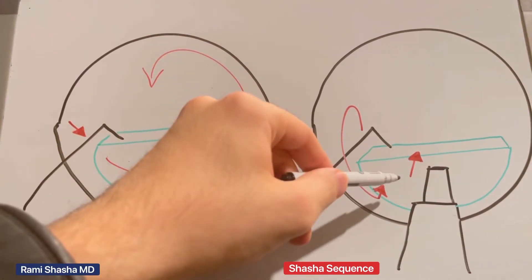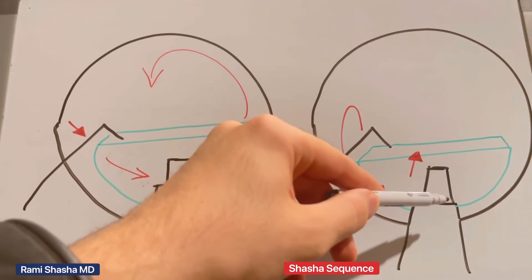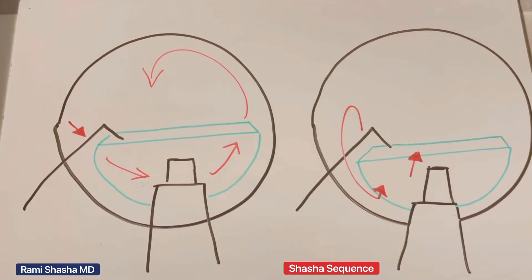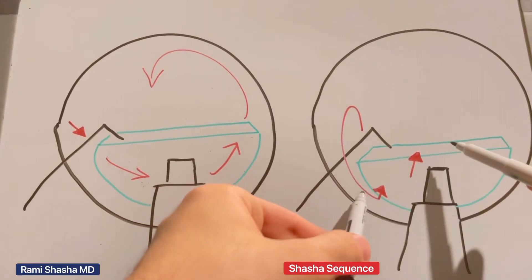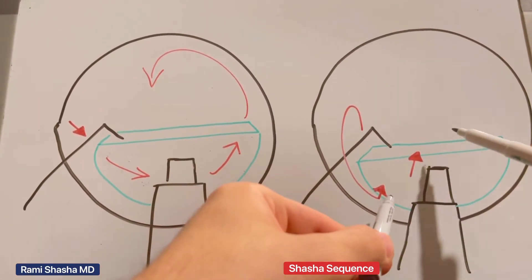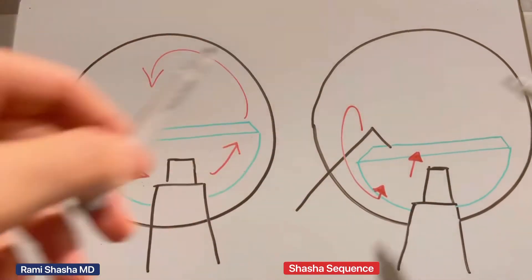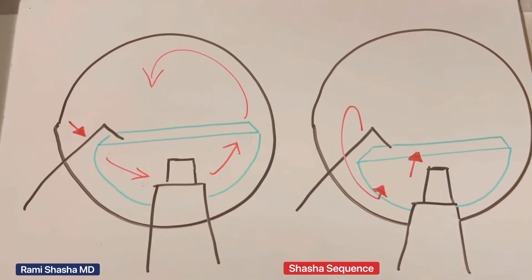the chopper underneath the endo-nucleus, the phaco tip above the endo-nucleus, essentially bring the two instruments together on position one. This will fracture the hemi-nucleus, entirely on position one.